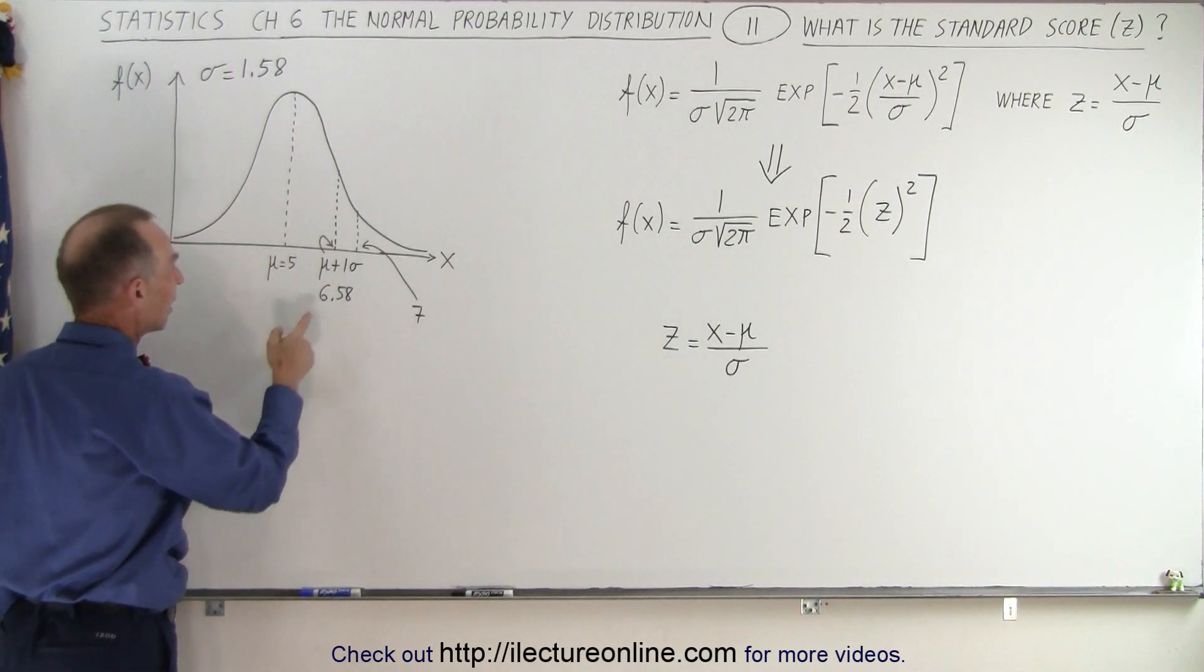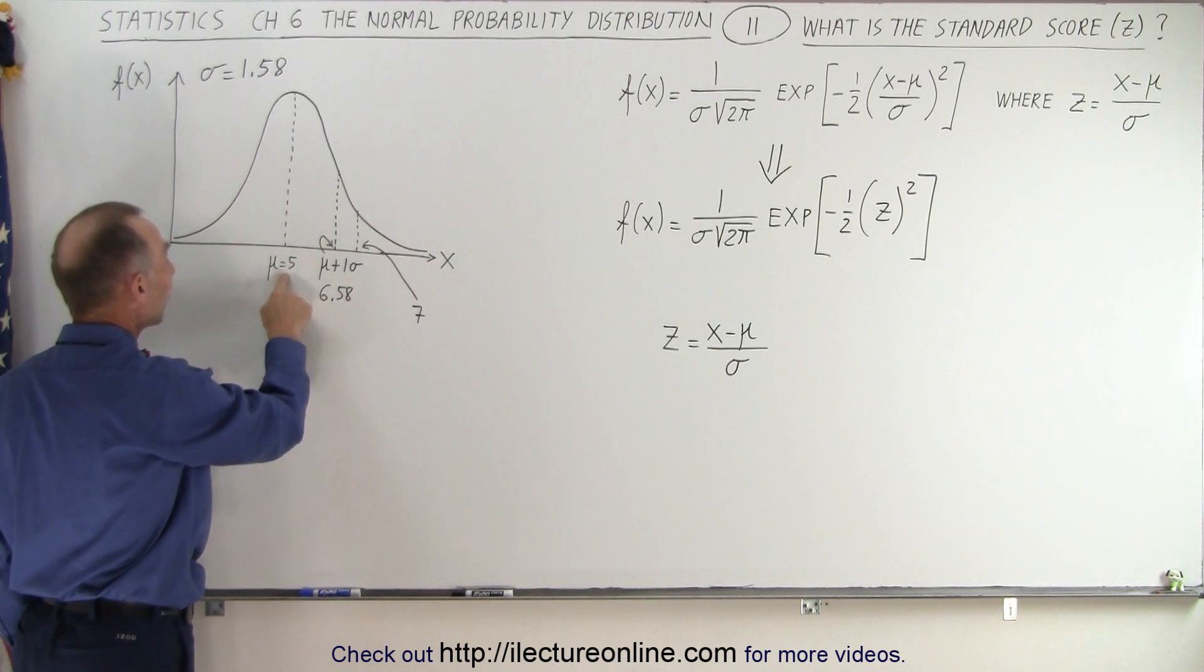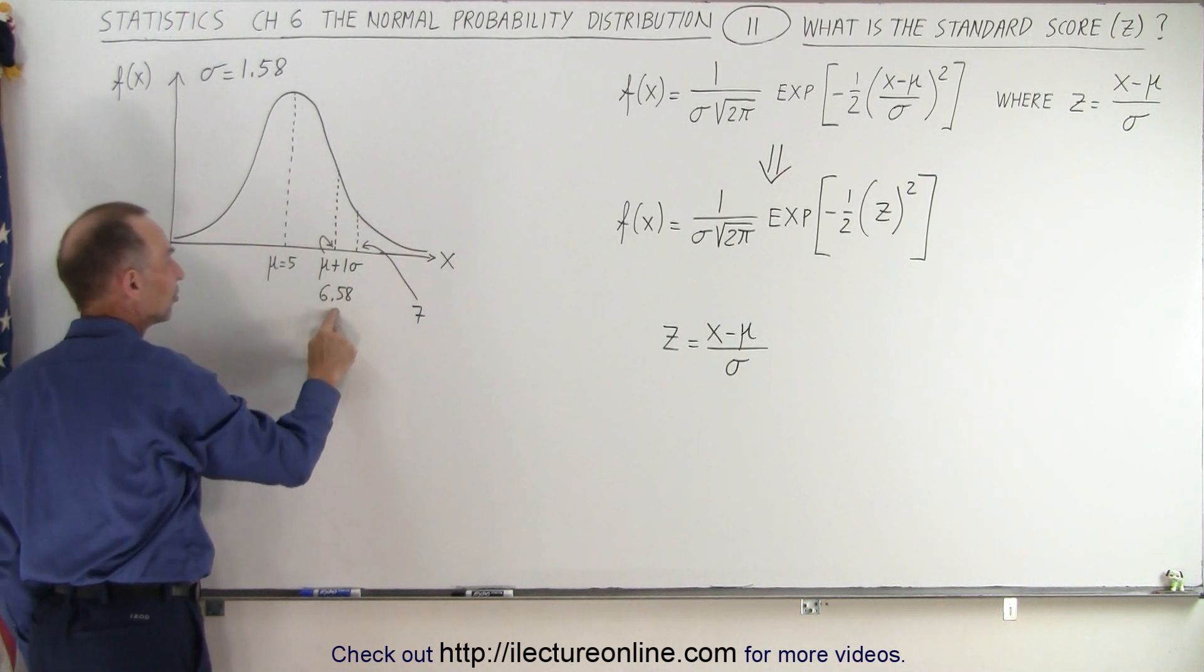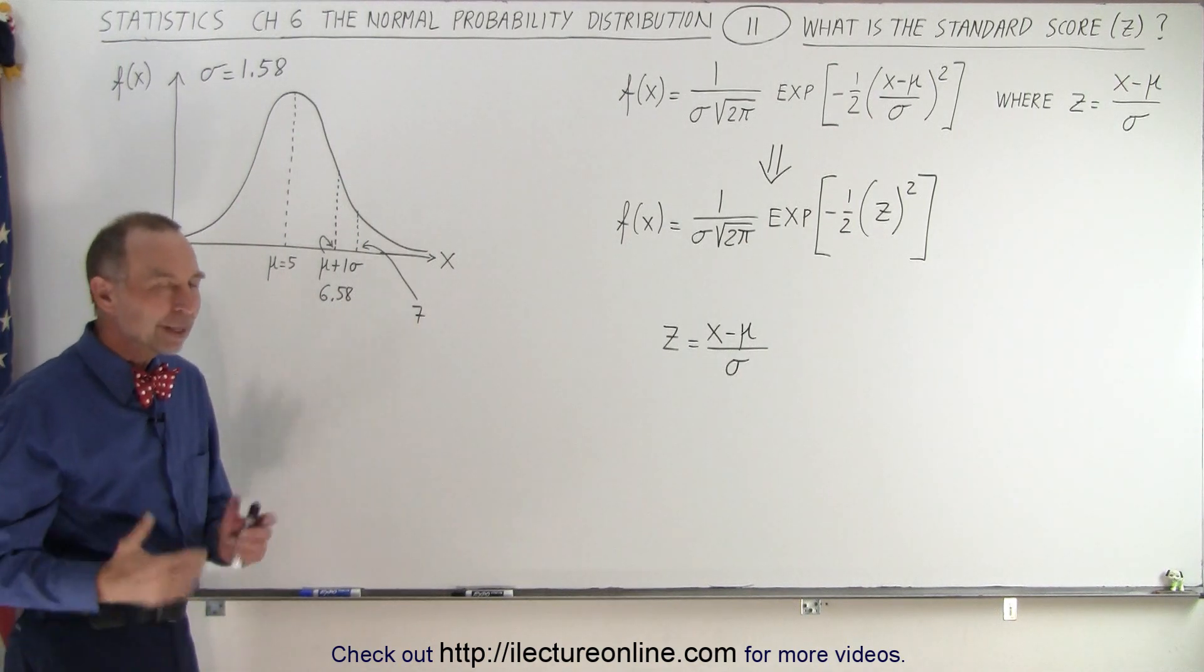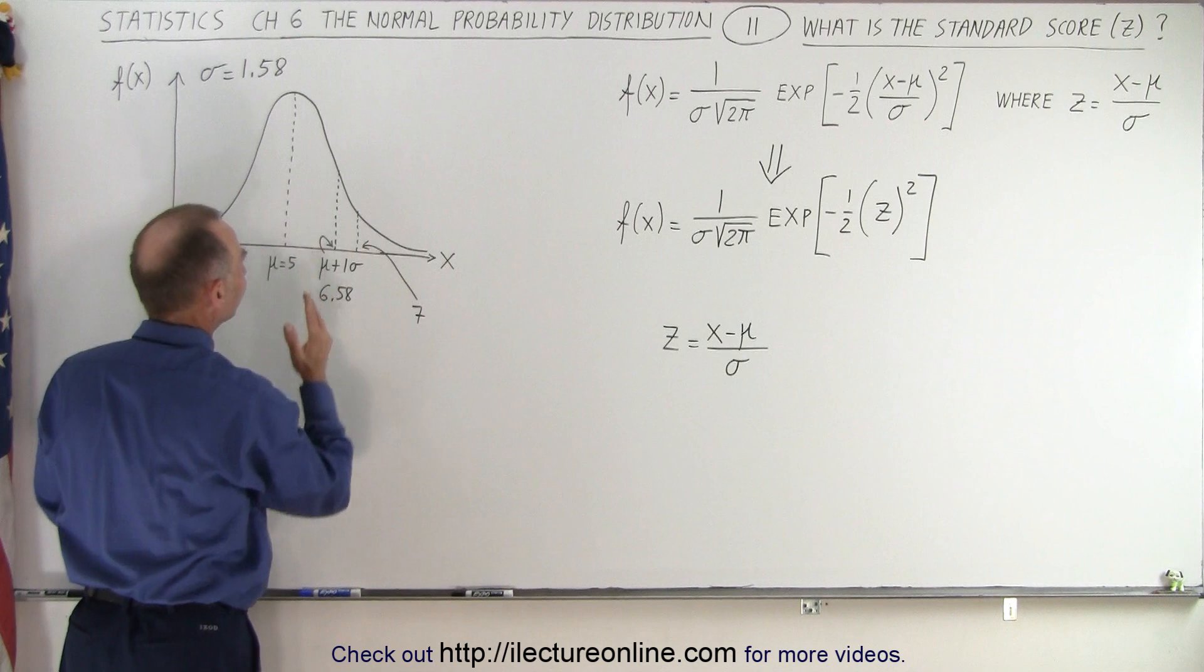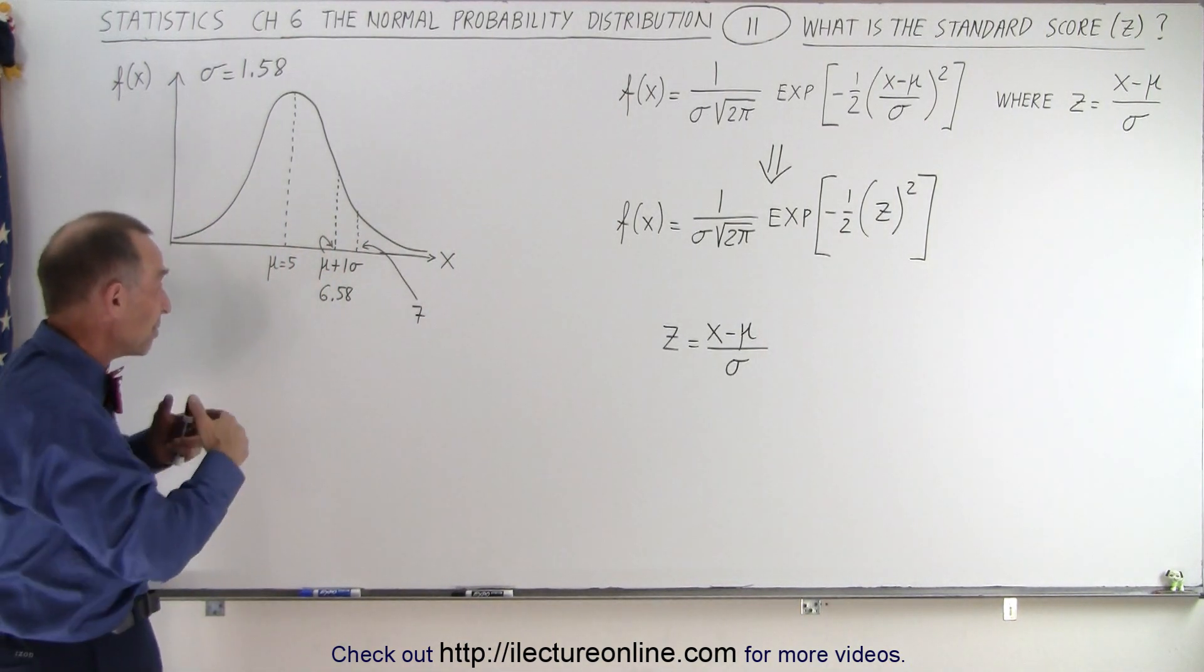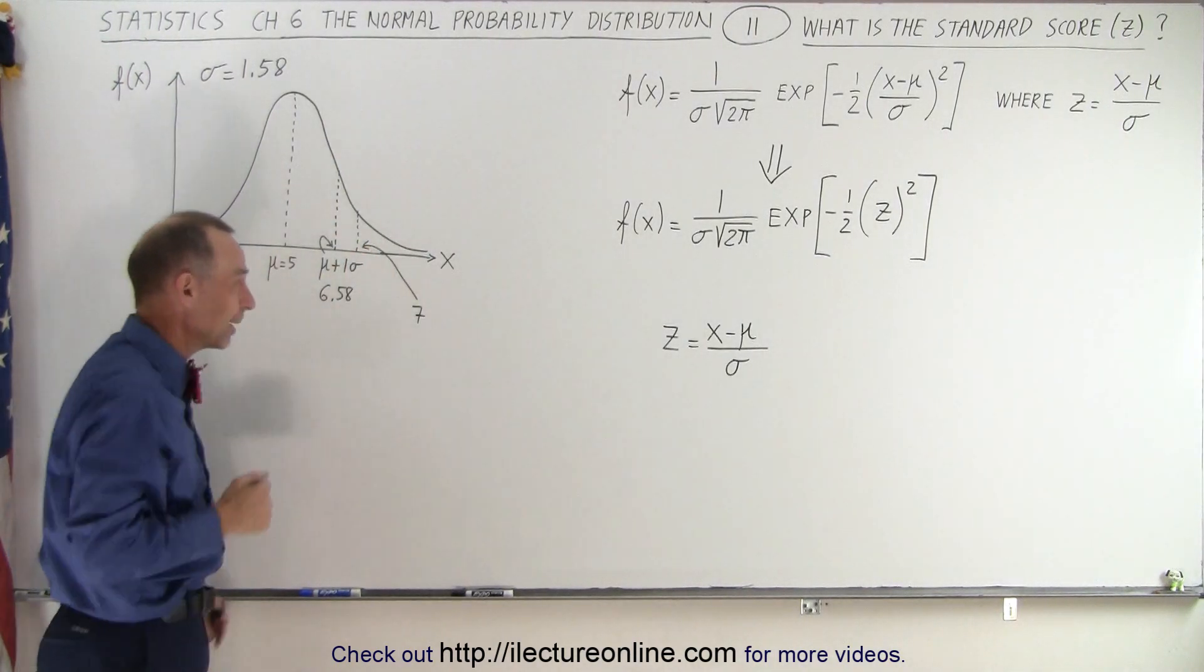Which means if we take the mean and we add one standard deviation, one sigma, we end up with 5 plus 1.58, which is 6.58. But let's say we want to know the area under the curve from 5 to 7. That didn't fall quite exactly on the mean plus 1 sigma or the mean plus 2 sigma, which is further away.